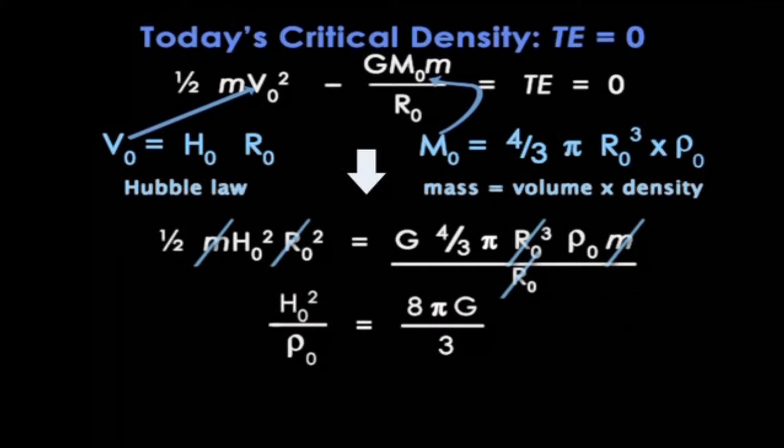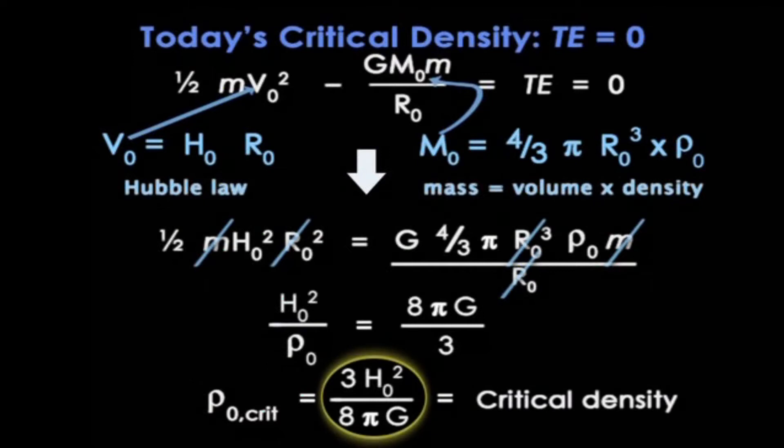One last manipulation. Let's just rearrange this as a condition for the density, ρ₀_crit, equals 3H₀²/8πG, where this is called the critical density. For a given Hubble constant, ρ₀_crit specifies that density that is just able to halt the expansion.